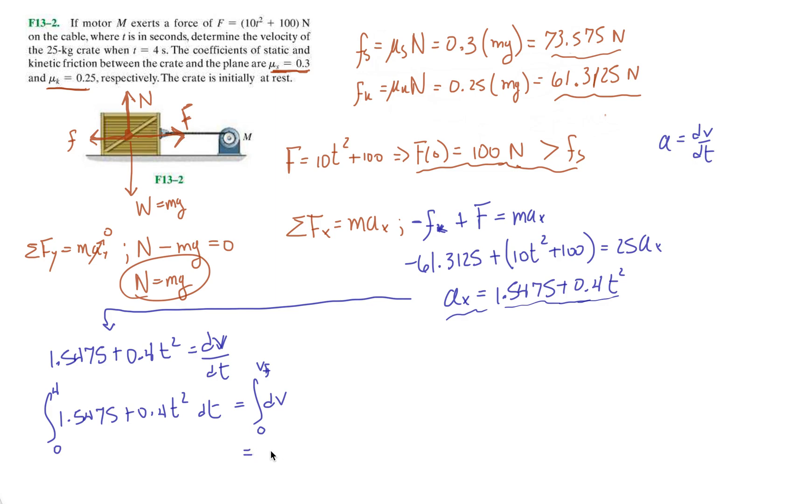So let's do the right-hand side real quick. That's just vf. Over here, we have 1.5475t plus 0.4t cubed divided by 3. Evaluate it from 0 to 4. So once we do this, you should get the velocity of this crate at time equals 4 seconds would be equal to 14.72 meters per second. And that's it. And then we figured out what the velocity would be of, what the velocity of the crate would be at 4 seconds.